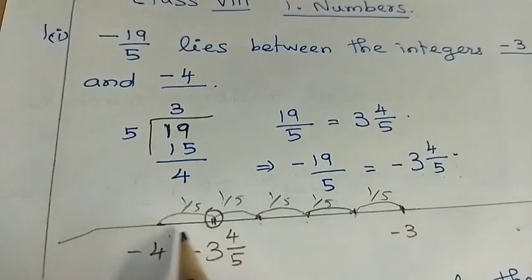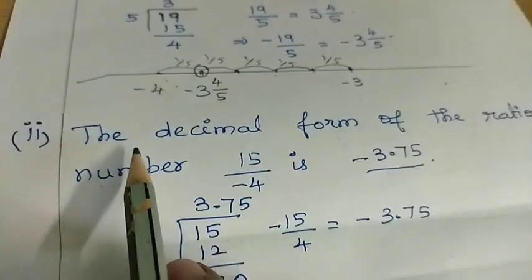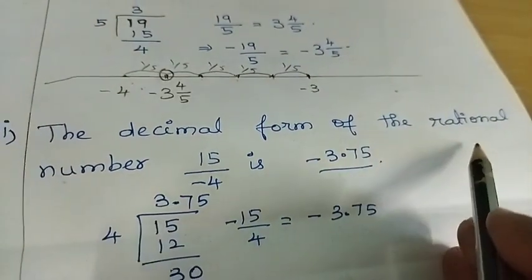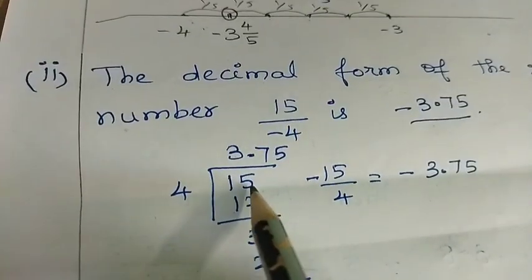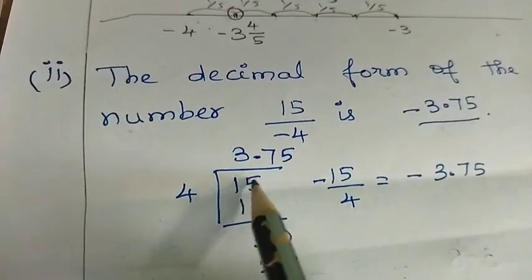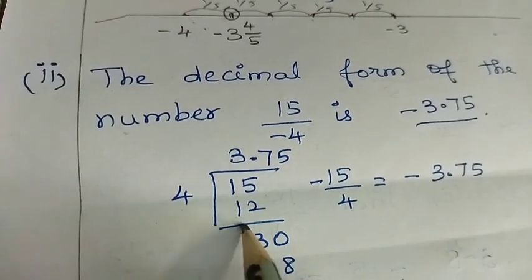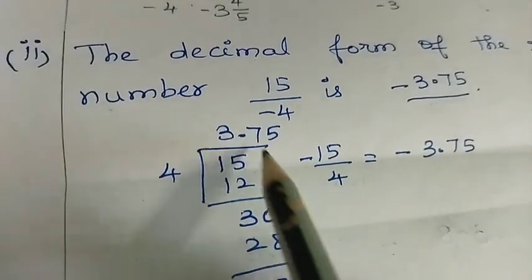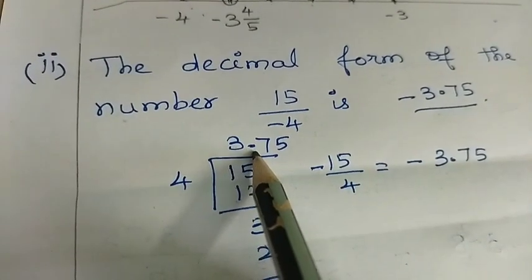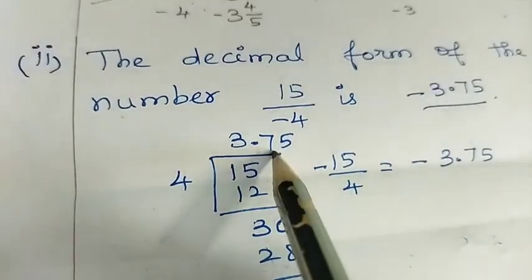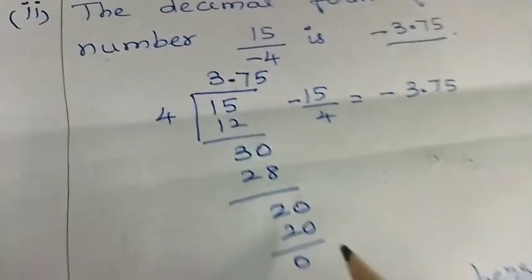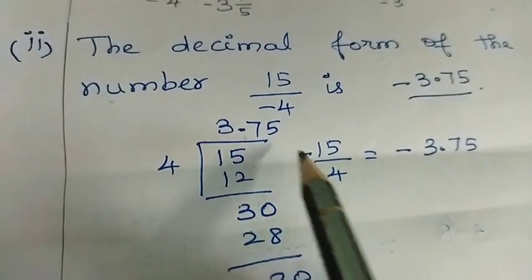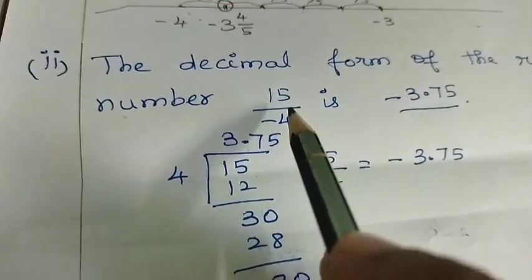So minus 19 by 5 lies between minus 3 and minus 4. Converting to decimal: 5 divides into 20, giving 4. So minus 3.75 is the decimal form.